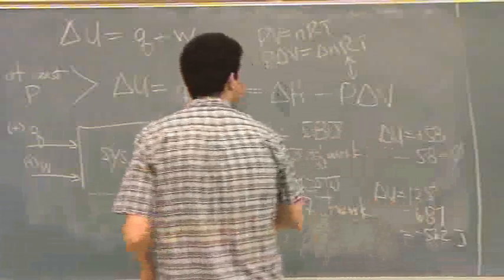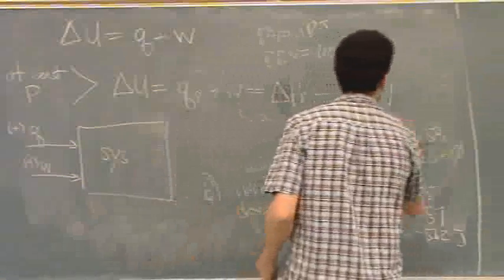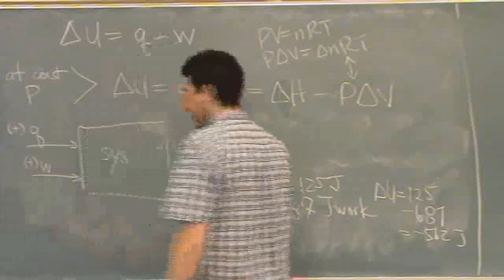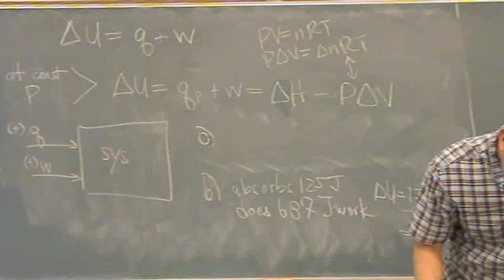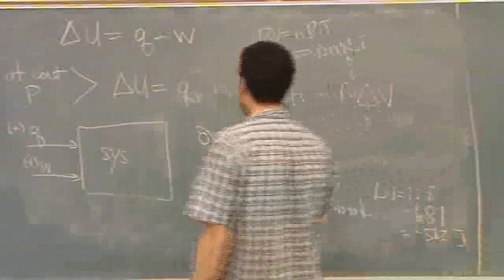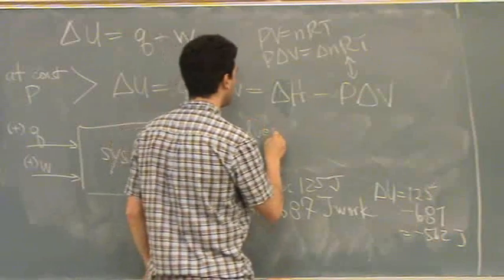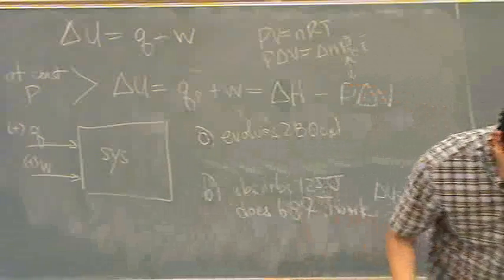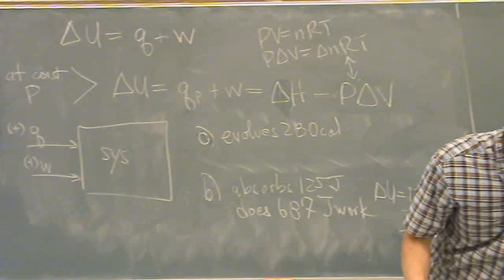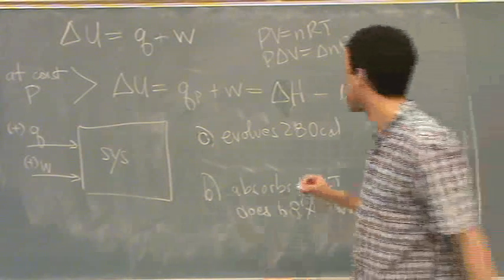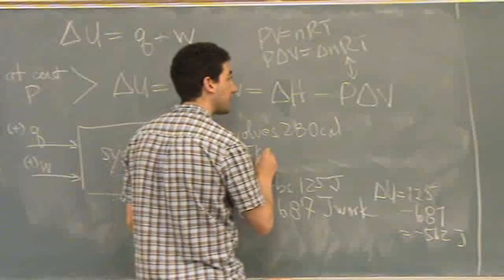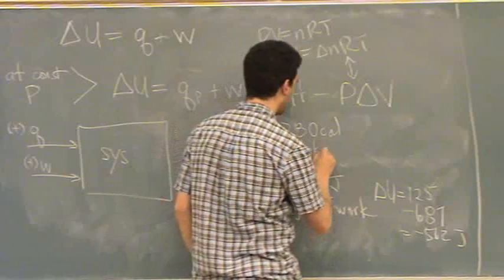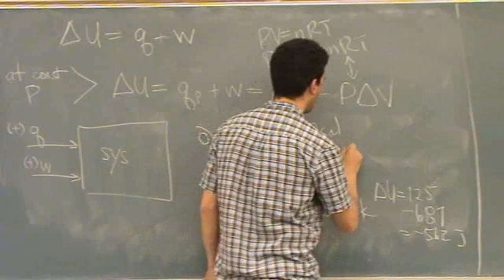And then let's see. Let's do part C. So I'll erase A. A. Oh sorry. C. C now. C says that it evolves 280 calories. Evolves 280 calories of heat. And has 1.25 kilojoules of work done on it. 1.25 kilojoules. That's why you grab the door. Thank you. Of work done on it.